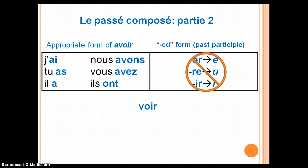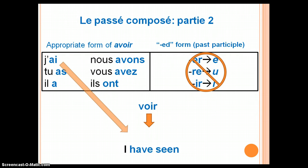Voir is an example of an irregular verb with its own unique past participle form. Suppose you want to say, 'I have seen.' First, I select the appropriate form of avoir — in this case, j'ai. However, since voir is irregular, I must use its special past participle form: vu. Now I have j'ai vu — I have seen, or I saw, or I did see.